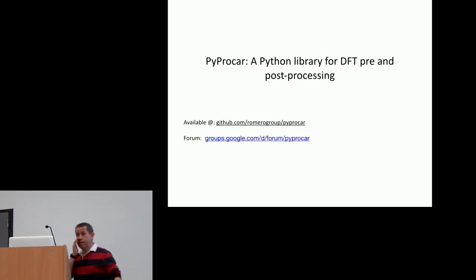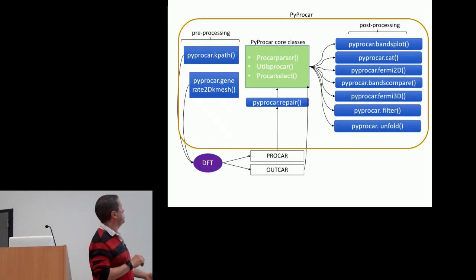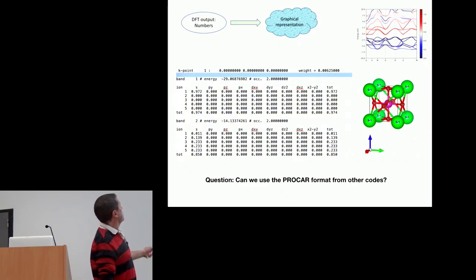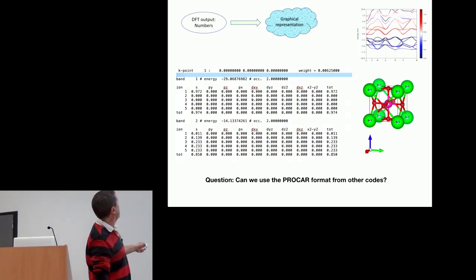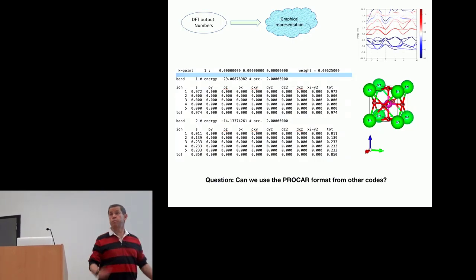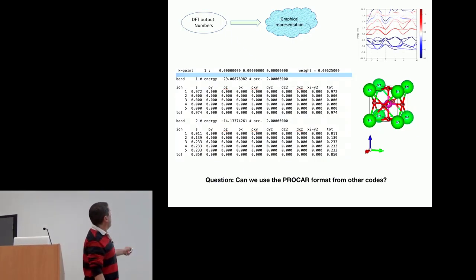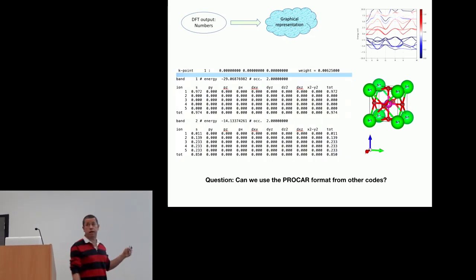The first development I'm going to be discussing is what we call PyProcar. It will read the PROCAR coming out from Abinit. This is the file that comes out from the PROCAR. You have the k-point, the corresponding bands, and then the different projectors along the different atomic orbitals. Here you have five atoms, and this is a spin non-polarized calculation.